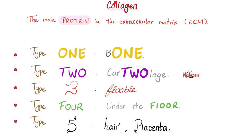Let's review the different types of collagen. Type 1 is in bone. Type 2 is in cartilage. Type 3 — look at how flexible this is — you'll find this inside blood vessels. Type 4 is under the floor, meaning in the basement membrane. And type 5 is in hair and placenta.